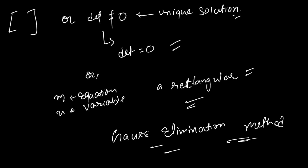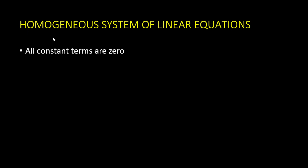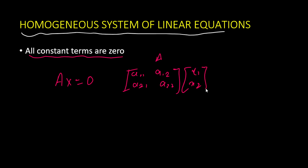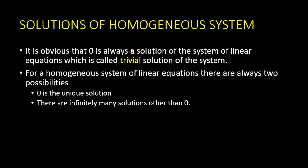Before getting into that, I want you to understand some cases of systems of linear equations. The first one is the homogeneous system of linear equations. A homogeneous system is one where all constant terms are equal to zero — that is, we have coefficient matrix A, variable matrix X, and the right-hand side is zero. For example: A = [a11, a12; a21, a22], X = [x1; x2], and the right side is [0; 0].